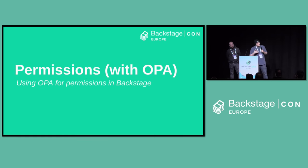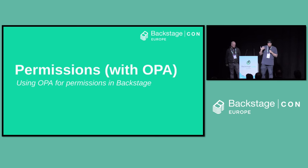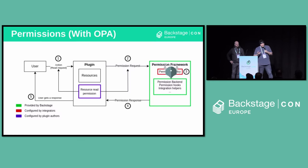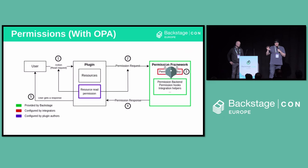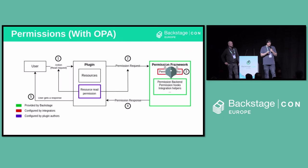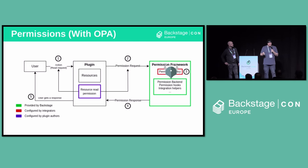What does this look like with OPA? If you're keen-eyed, you can see where this is going — you basically just replace the permission policy with OPA. Instead of sending it to a TypeScript policy, the permissions framework backend forwards it to OPA. OPA makes a decision, sends it back to the permissions backend, and that sends it down the chain to the user.